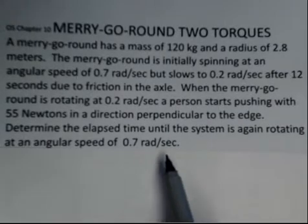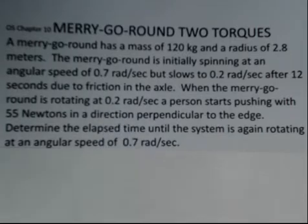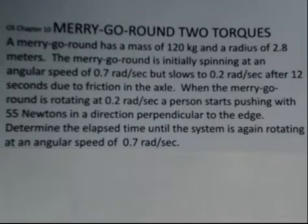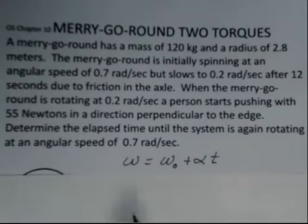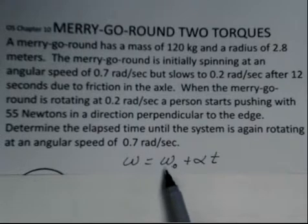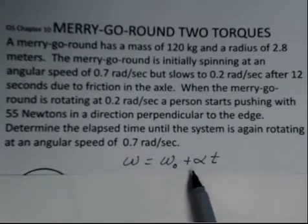So we want to know time. We've got information in this problem about radians per second. We're going from 0.2 up to 0.7. So as we consider what equation might be helpful, we know the desired final radians per second, 0.7, we know where we're starting from, 0.2, we want to know time. We need to do some calculations to determine the angular acceleration.